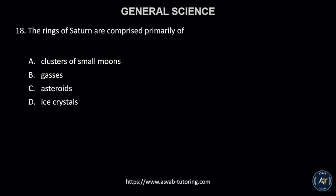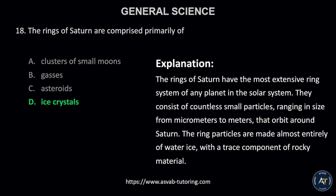Number 18. The rings of Saturn are comprised primarily of? A. clusters of small moons, B. gases, C. asteroids, or D. ice crystals? The correct answer is letter D, ice crystals. The rings of Saturn have the most extensive ring system of any planet in the solar system. They consist of countless small particles, ranging in size from micrometers to meters, that orbit around Saturn. The ring particles are made almost entirely of water ice, with a trace component of rocky material.